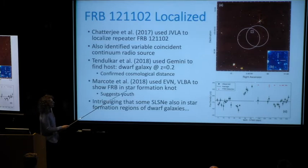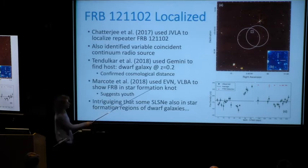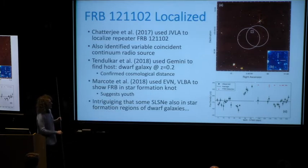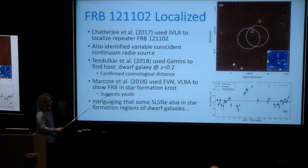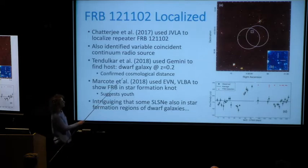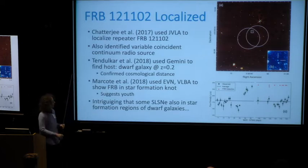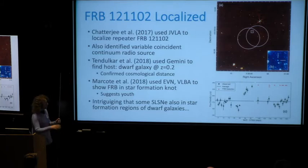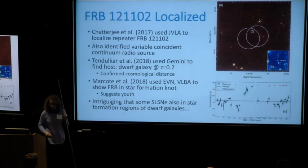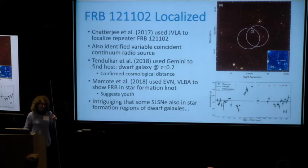With VLBI — using the European VLBI Network and the VLBA — you can show that the FRB is not merely in a dwarf galaxy but off-center from it, in a star formation knot. That right away suggests youth — this has got to be a young object. It's also intriguing that some superluminous supernovae are in star formation regions of dwarf galaxies.